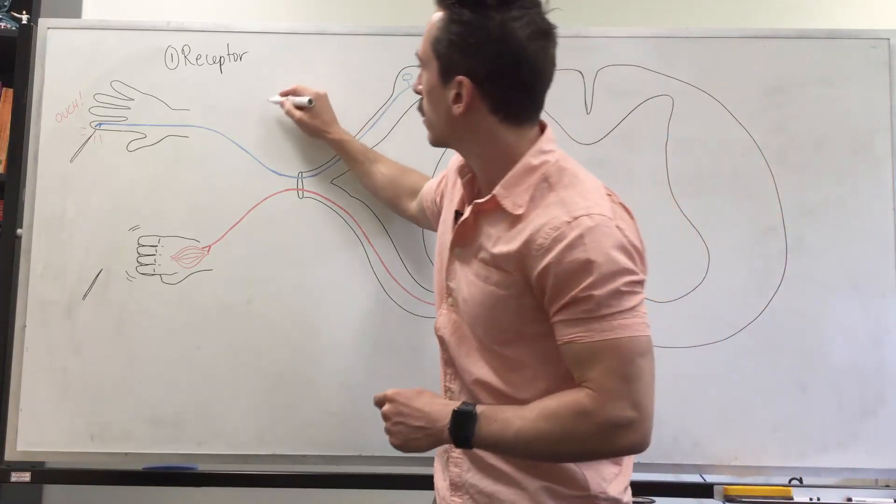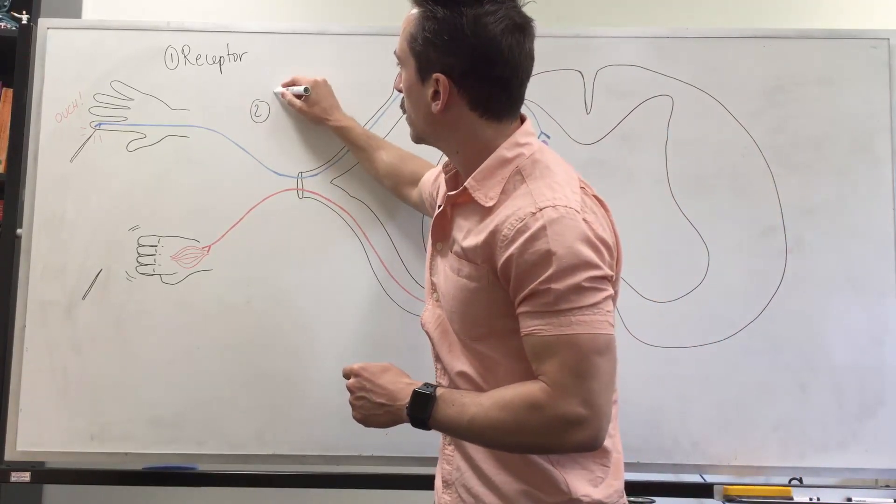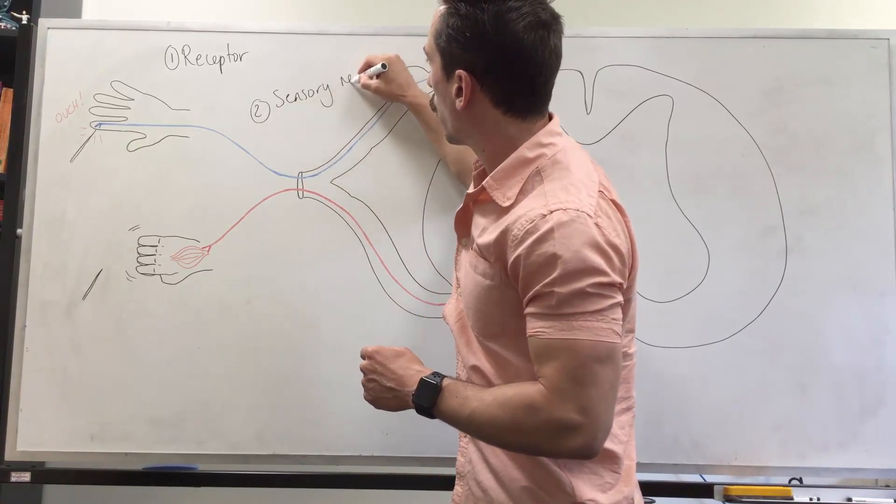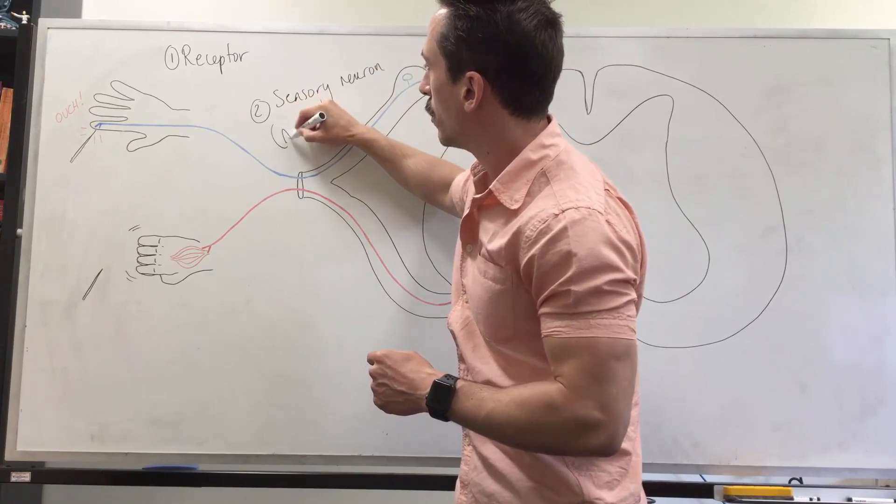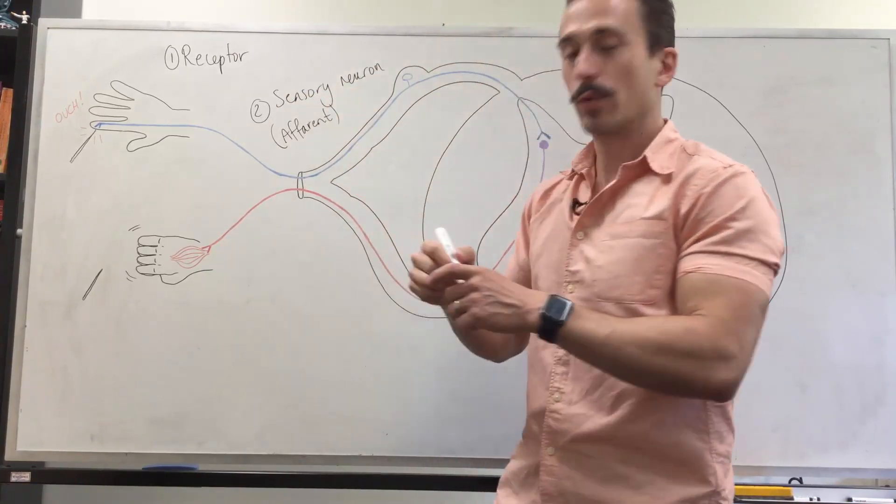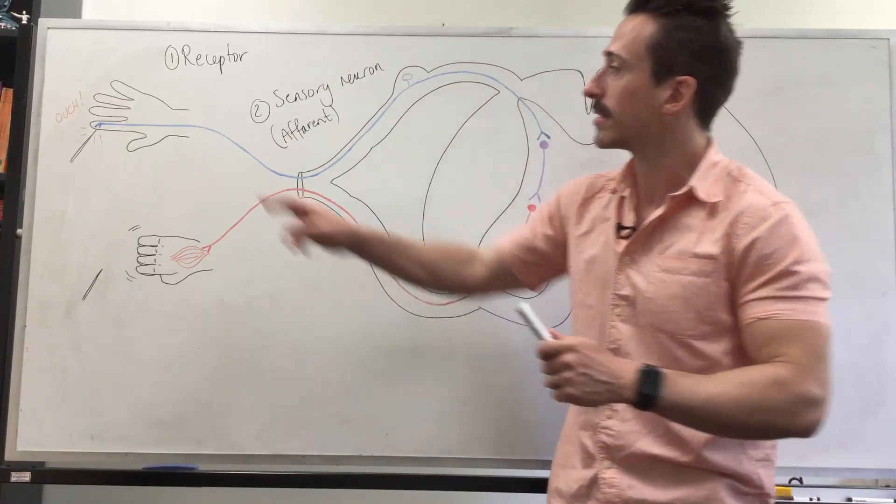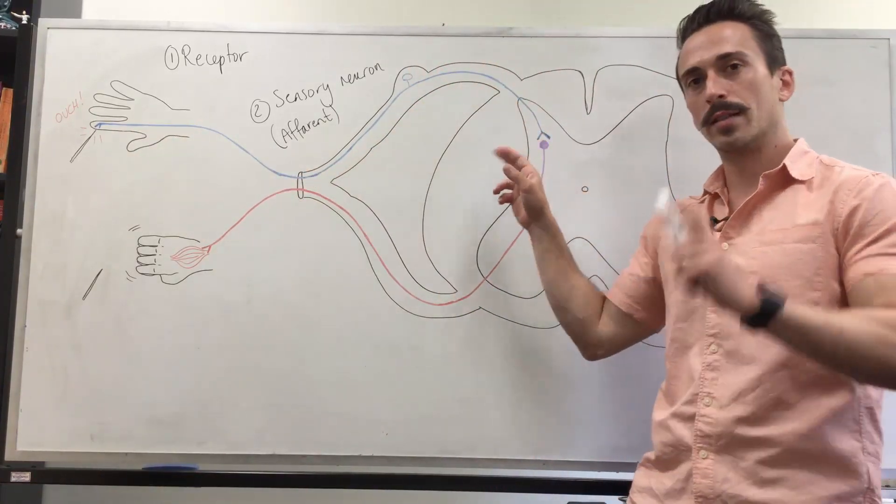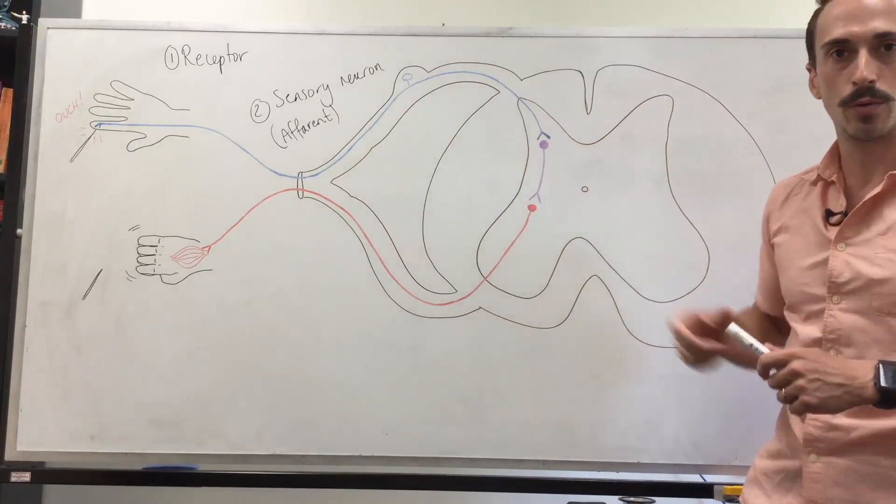Which is also known as the afferent neuron. Now what the afferent neuron does is it takes the electrical energy and sends it into the central nervous system. In this case it's going to be the spinal cord.